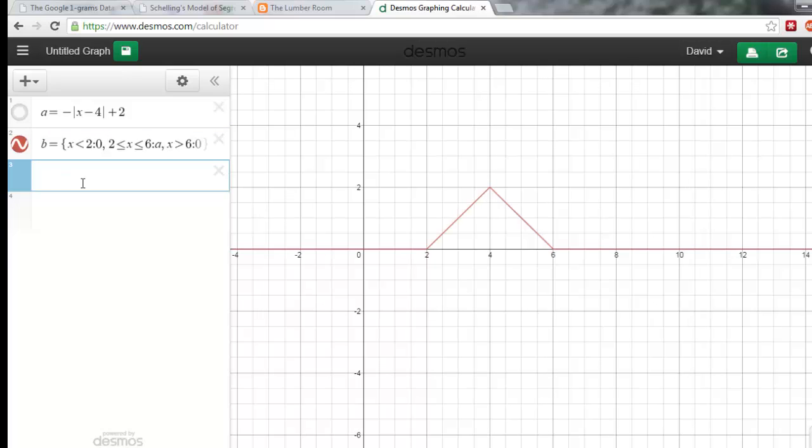If I wanted to, I can now make a new function, c, which is equal to, say, b plus one. So that's kind of cool. I could also have it be two times b plus one. So you can transform your piecewise defined functions however you want, which is extremely convenient.